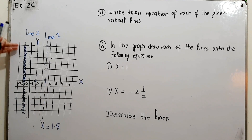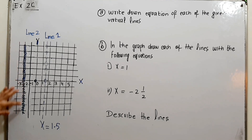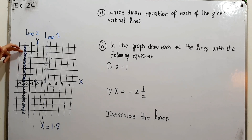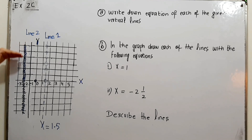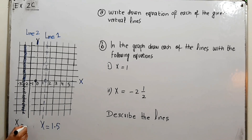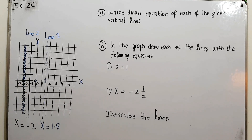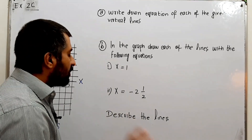Line number two, indicated by small circles to make it prominent, is a vertical line passing through x = -2 on the x-axis. The value of x is the same throughout the line — x equals -2 everywhere — whereas y changes with different values at different points. So its equation is x = -2.